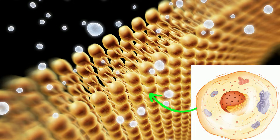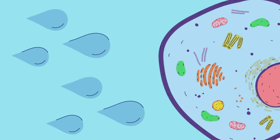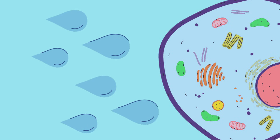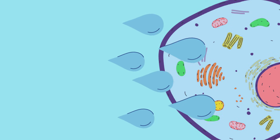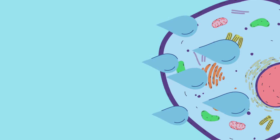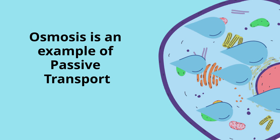Osmosis is the process of water moving from a high concentration of water to a low concentration of water. This helps the cell maintain correct amounts of water inside the cell. This is an example of passive transport.